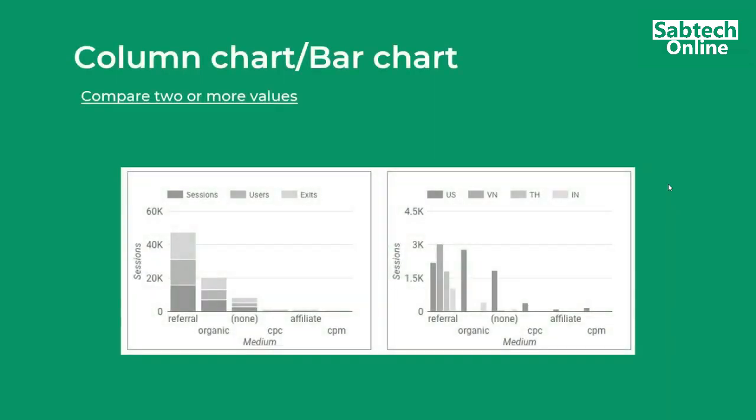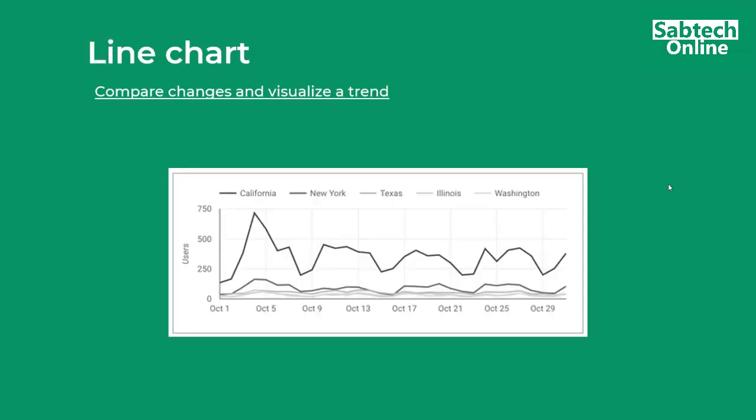Starting with the column bar chart, this one is used to compare two or more values, as we shall see ahead on the principles. Then also the line chart, which is used to compare changes and visualize the trend — it looks at data when variables are changing over time.